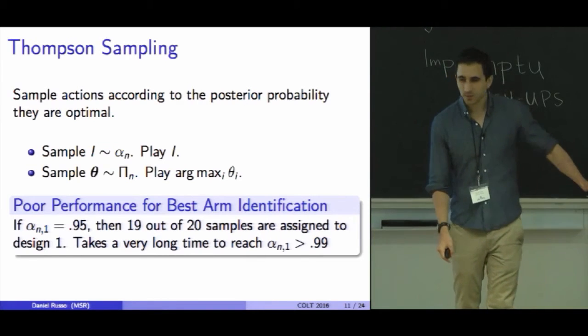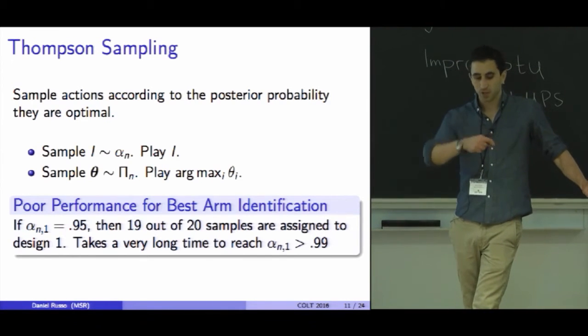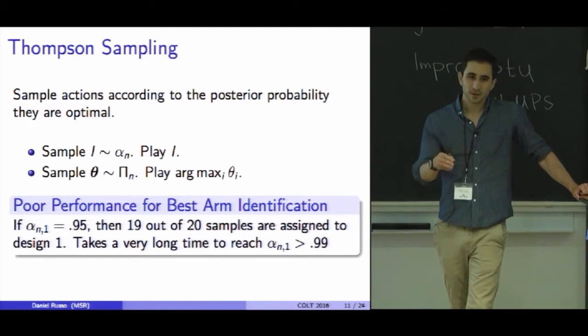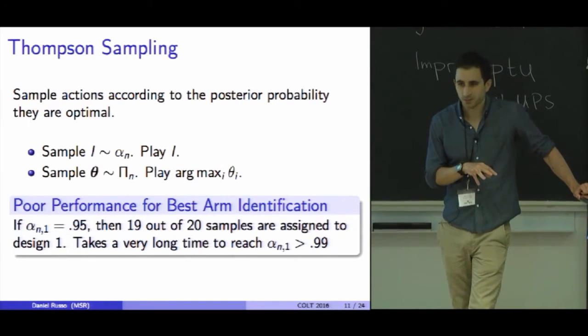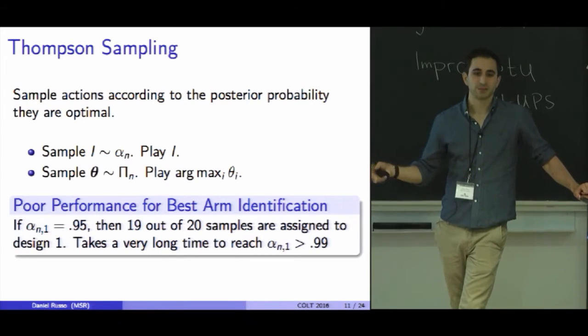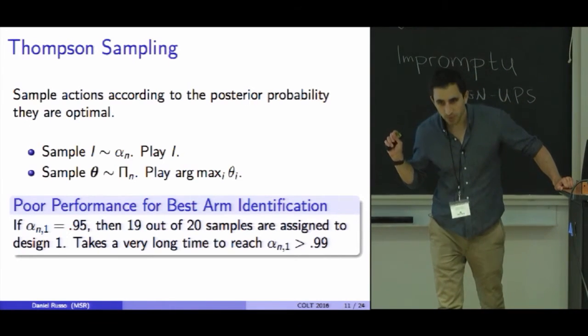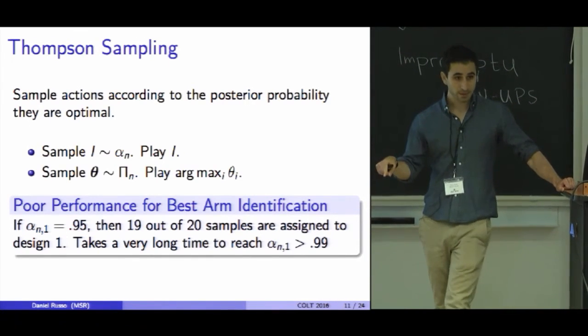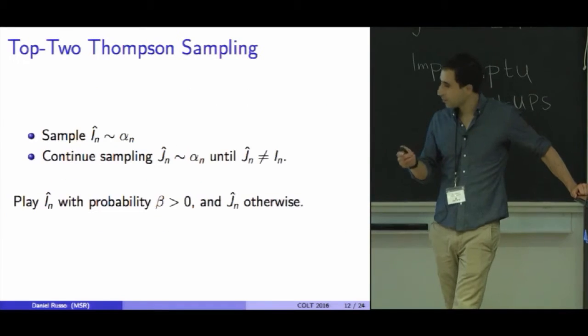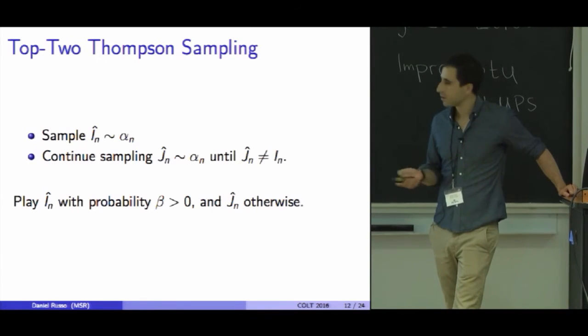It turns out that this algorithm has very poor performance for the best arm identification problem. If you think for a while why this would be, it becomes pretty clear. As the posterior concentrates—so let's say I have a 95% chance under my posterior that I think alternative one is the best alternative—then only one in 20 times will I sample anything other than the first design. So I'm really not refining my knowledge about the other ones at a very high rate. As a result, it takes a very long time for this posterior to really definitively converge on one thing. Top two sampling is just going to directly avoid this problem by not allowing the sampling probabilities to concentrate too much.